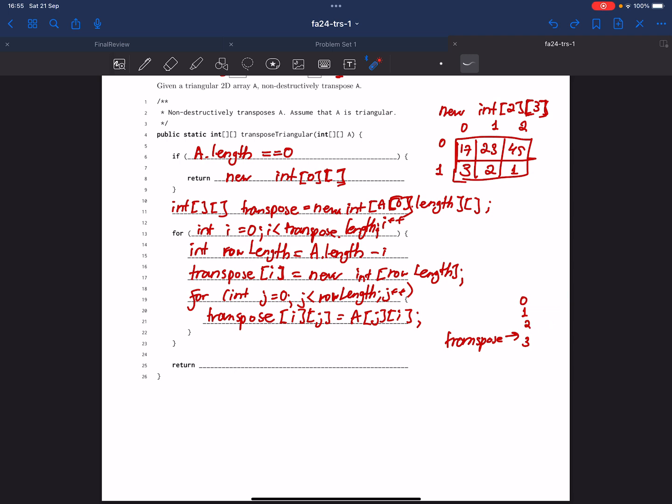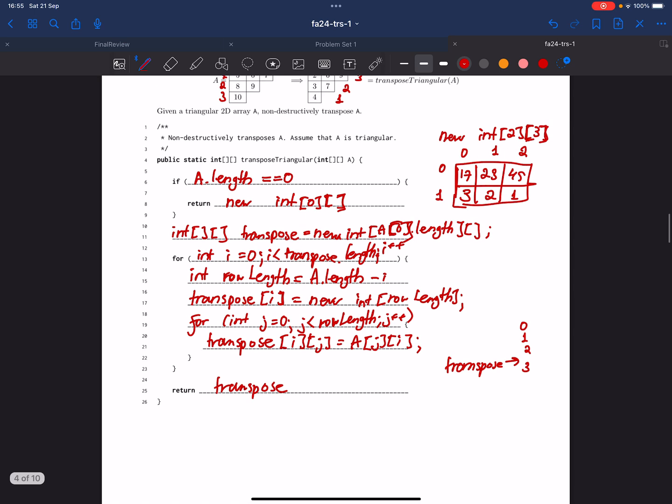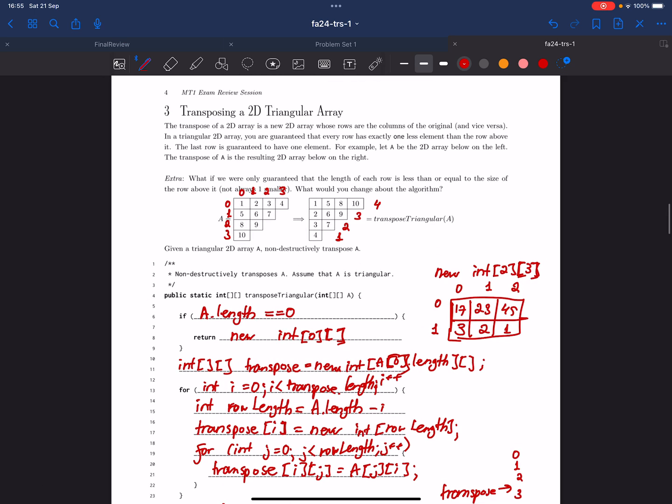Now we need to return our transpose on line 25. And we are done with question number three of the worksheet, transposing a two-dimensional triangular array.